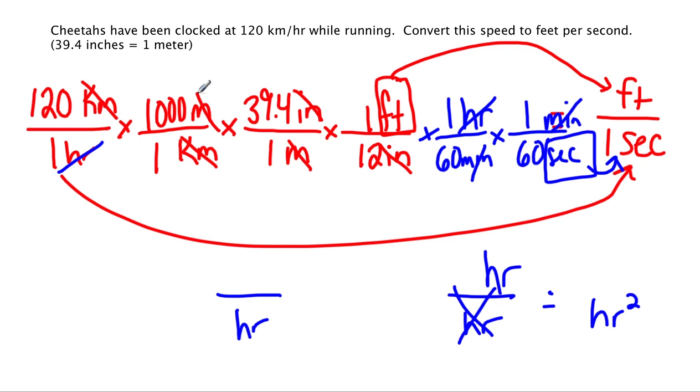Do the math. 120 times 1,000 times 39.4 divided by 12, because it's on the bottom. Divided by 60. Divided by 60 equals... And whatever you get is going to be how many feet that little cheetah can travel in one second. So again, if you end with two units, feet per second, you better start with two units.